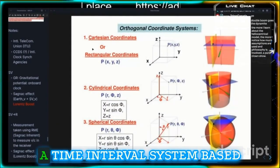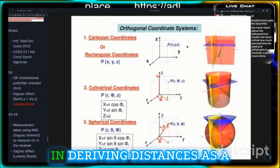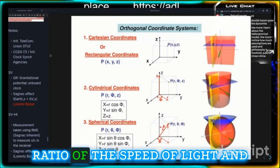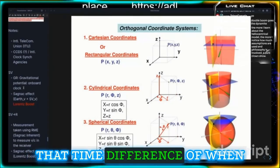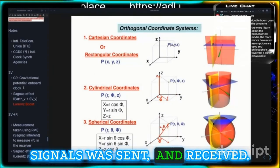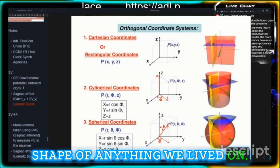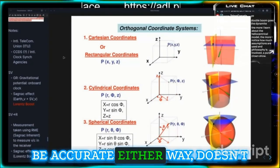Again, because GPS is a time interval system based in deriving distances as a ratio of the speed of light and that time difference of when signal was sent and received, it wouldn't matter what shape of anything we lived on. The distance derived would be accurate either way.